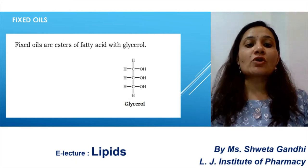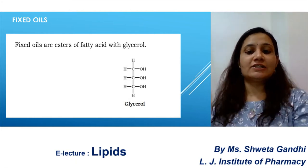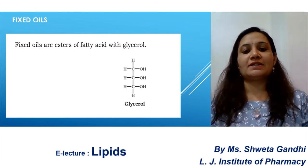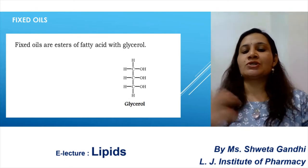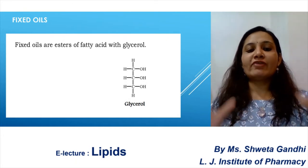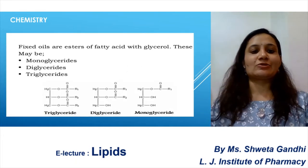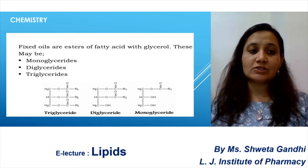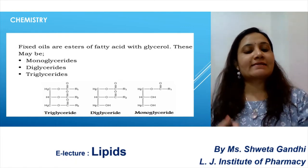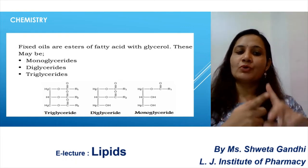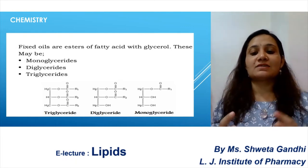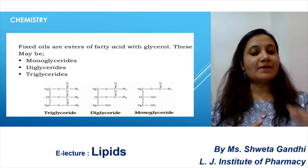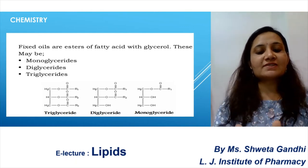Fixed oils are esters of fatty acids with glycerol. You can see the structure of glycerol — it has three carbon atoms with H and OH groups. Fixed oils may be of different types: monoglyceride, diglyceride, and triglyceride. As the names suggest, mono means single, di means double, and tri means three.